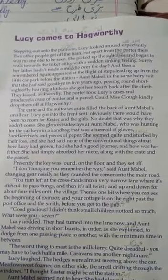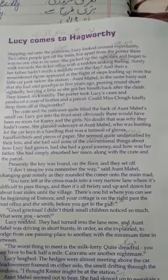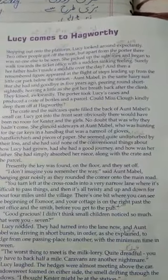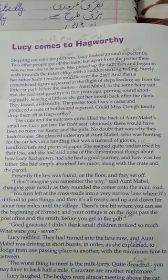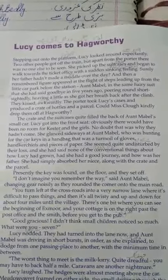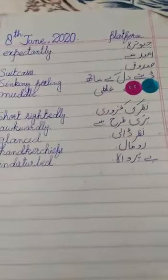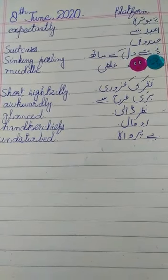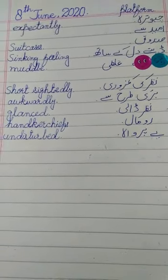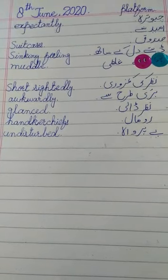Aaj hum logon ne yeh half chapter padha hai aur baaki half chapter agla lecture mein padheinge. Aap words meanings likhein aur carefully chapter ki reading karein aur isko learn karein. Words meanings: platform-chabutra, expectantly-ummeed se, suitcase-sandook, sinking feelings-doobte dil ke saath, muddle-galti, short-sightedly-nazar ki kamzori, awkwardly-buri tarhan se, glanced-nazar daali, handkerchief-rumal, undisturbed-beparwah. Our lecture is completed — good luck, Allah Hafiz.